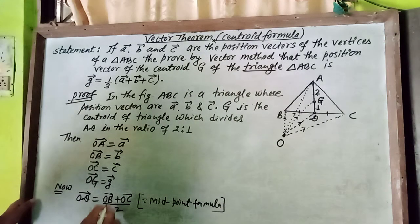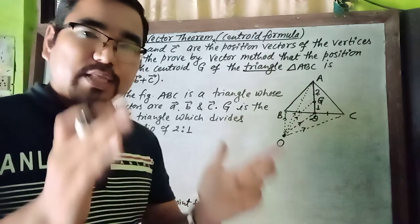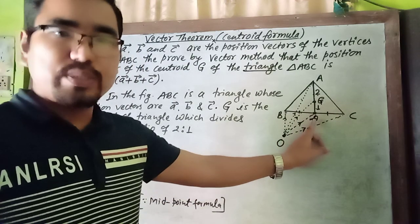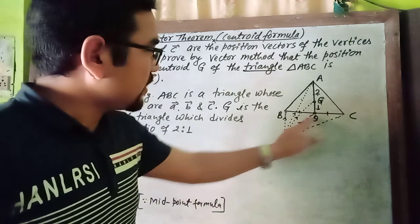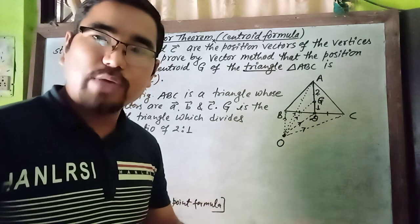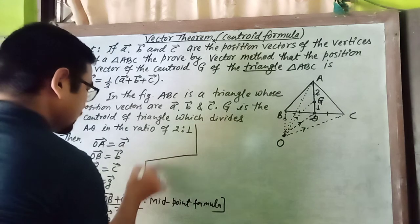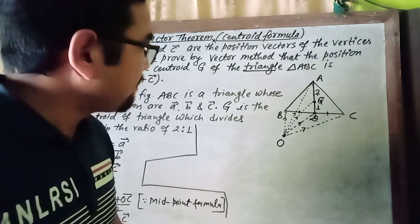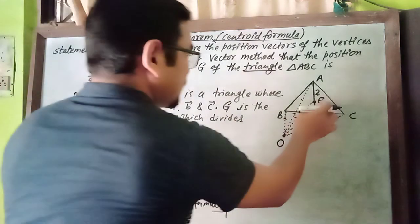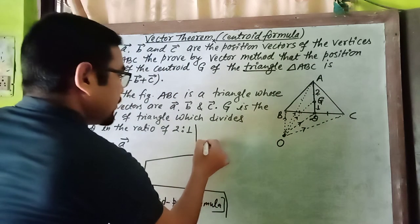Substituting: OD = (b vector + c vector) / 2. Now we are going to find the position vector of G. OG vector is the position vector of G. Therefore, the position vector of capital G is given by applying the section formula.